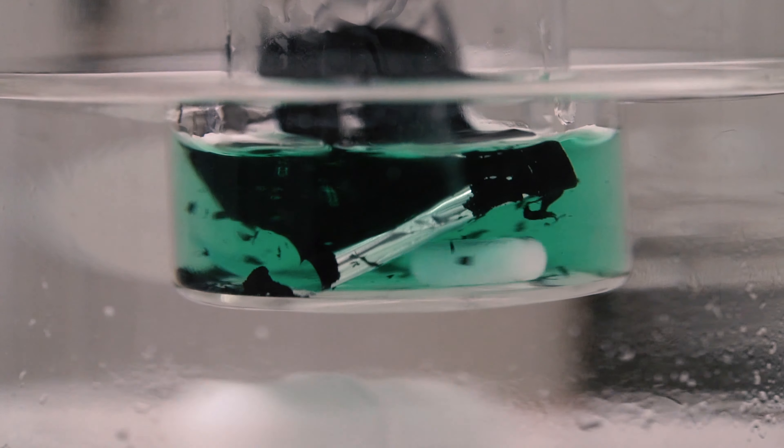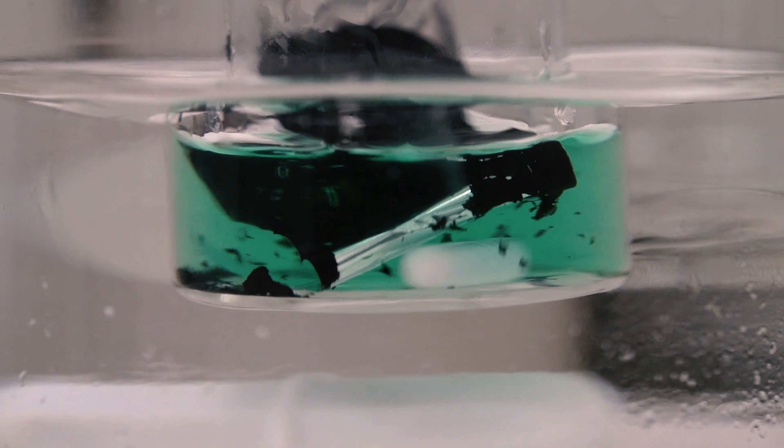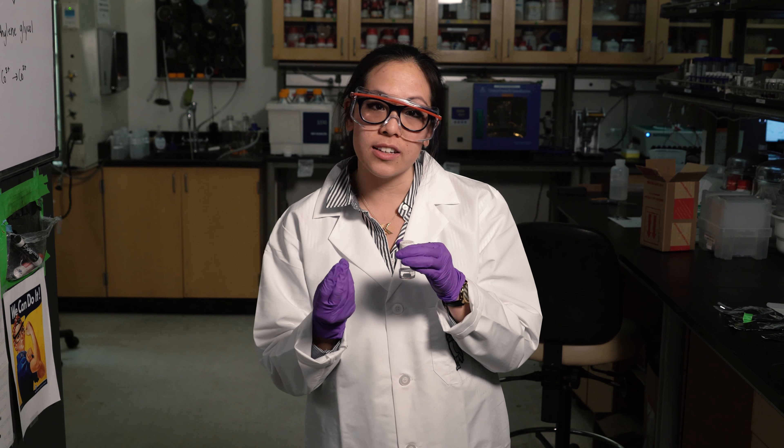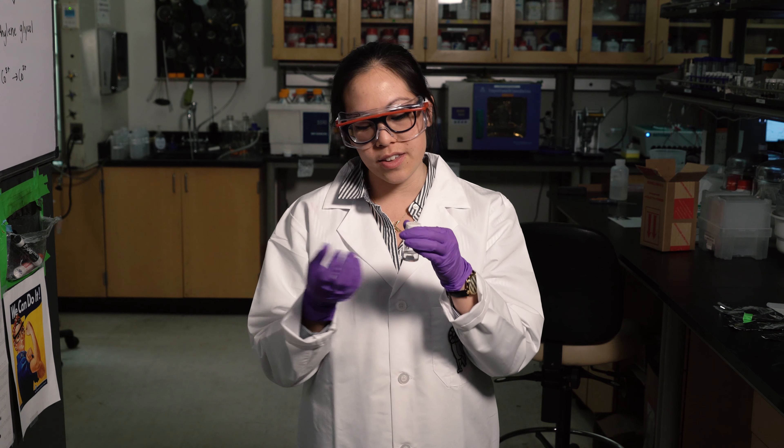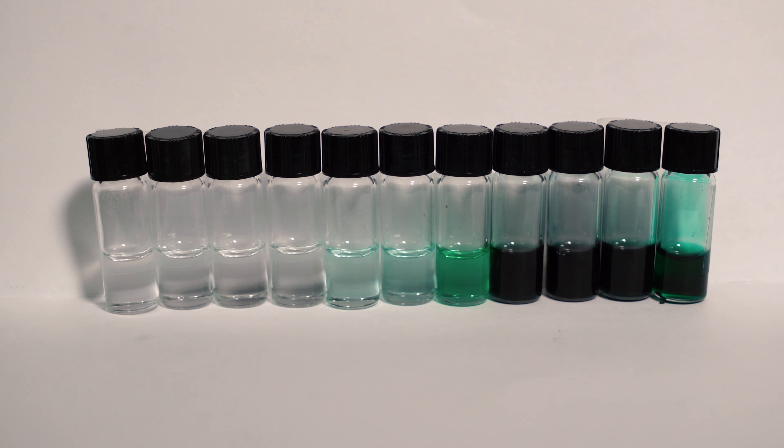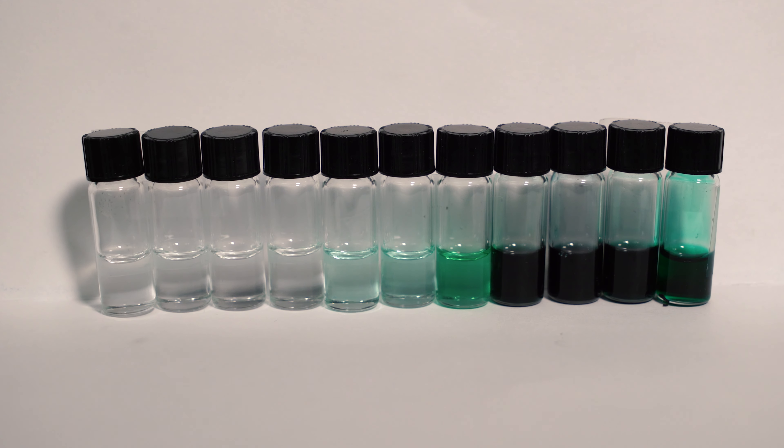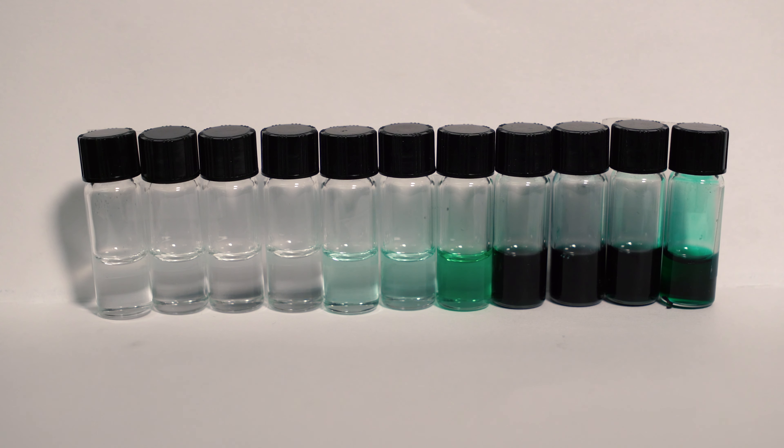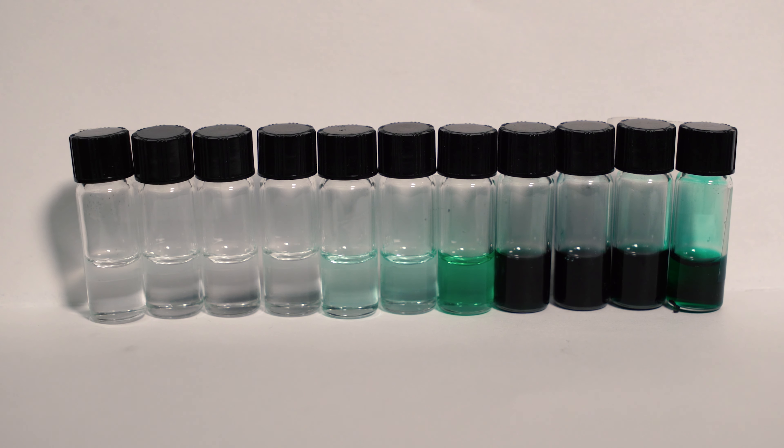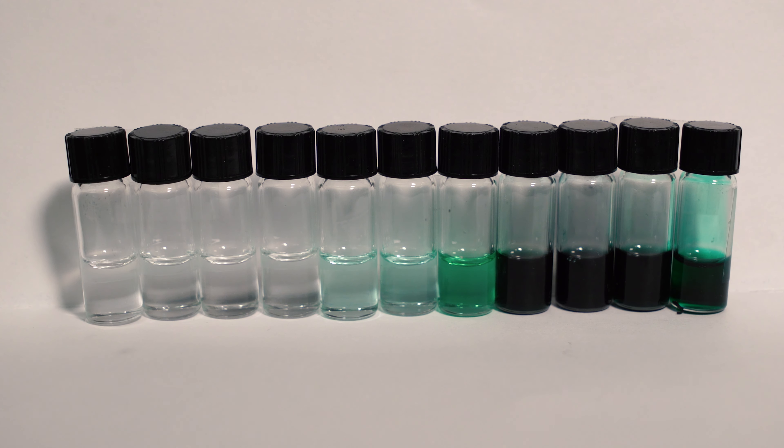You just add your cathode powder or your entire cathode foil into this eutectic, and applying a little bit of heat, you can see that the color changes from clear to a bluish-greenish hue, which indicates the dissolution of cobalt from your cathode. And the deeper the blue, the more cobalt you have leached into your solution.